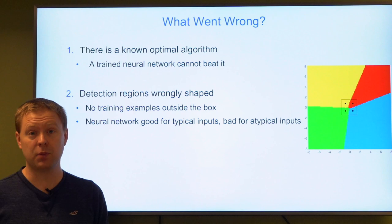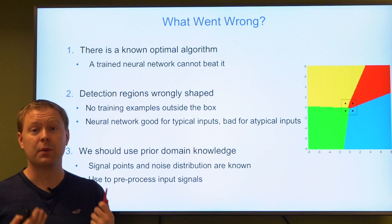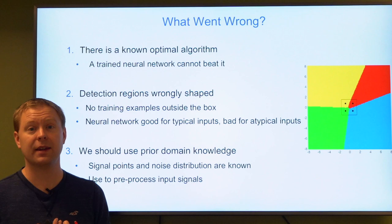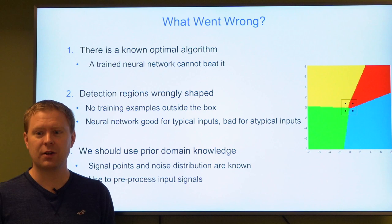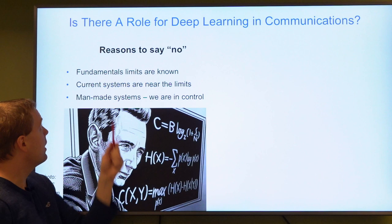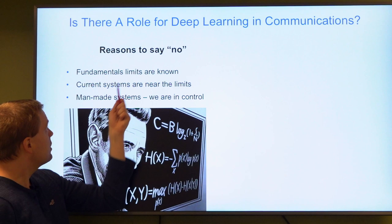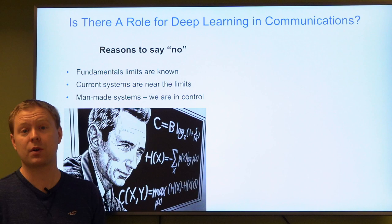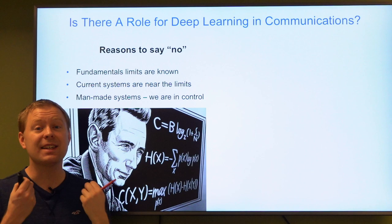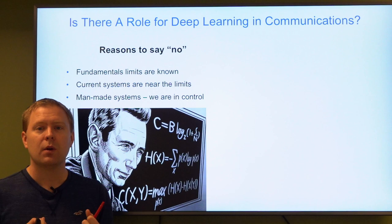So is there a role for deep learning in communications? Some might say no. Claude Shannon developed fundamental limits for communications, and in many current systems we are already very close to those limits, giving the impression there is nothing to improve. Since communication systems are man-made — unlike image processing where you just receive an image — we design the signals we want to deal with. We are in control, so we can design things such that we know how to solve them. We might not need deep learning.